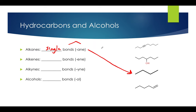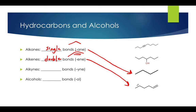Alkenes are molecules that consist of at least one double bond. This molecule is an example of such — you can call this one 1-hexene. You start off here and count your way over because the alkene has priority. We name them depending on the location of the double bond in the chain, so you'd start from the end closer to the double bond.